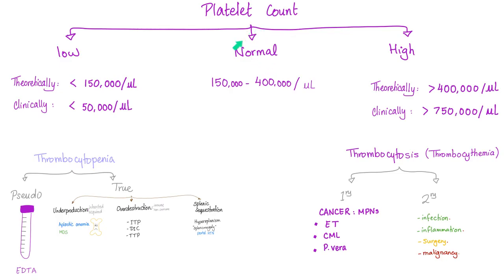Platelet count can be normal, low, or high. In TTP it's low — thrombocytopenia. Is it pseudo or true thrombocytopenia? It's true thrombocytopenia. Is it due to underproduction, over-destruction, or splenic sequestration? It's due to over-destruction. Is it immune destruction or non-immune destruction? It's non-immune destruction. Therefore, the Coombs test is going to be negative.